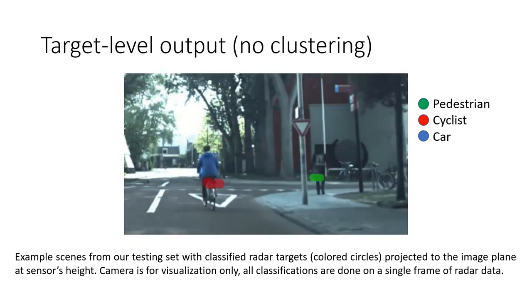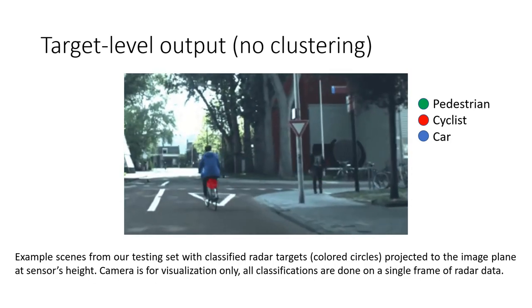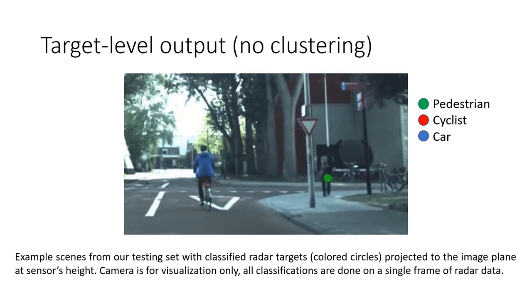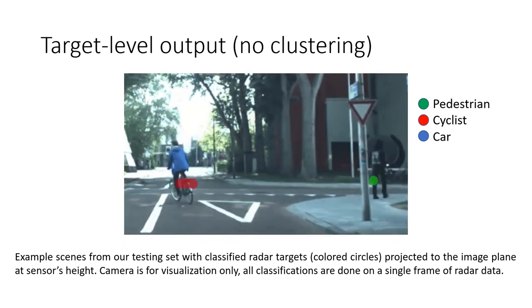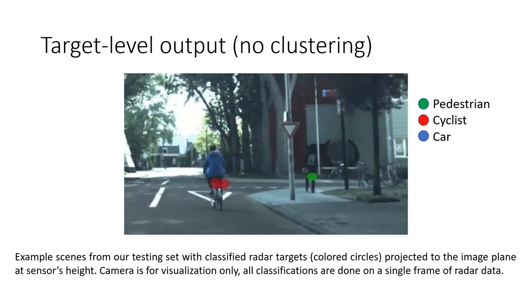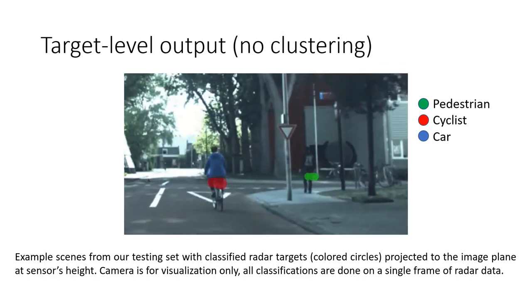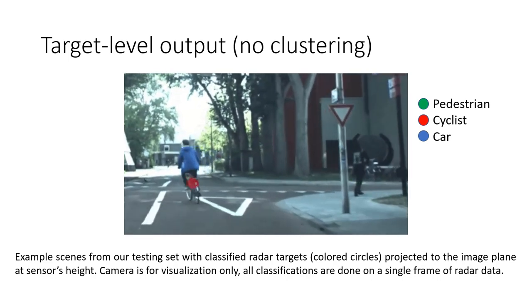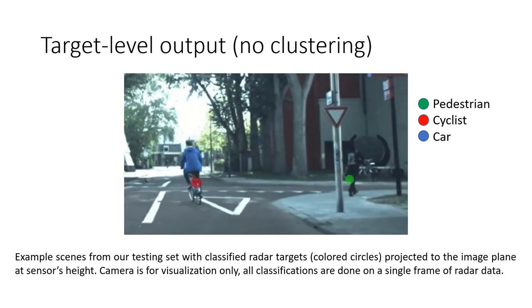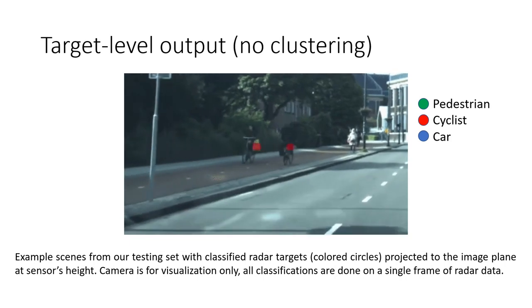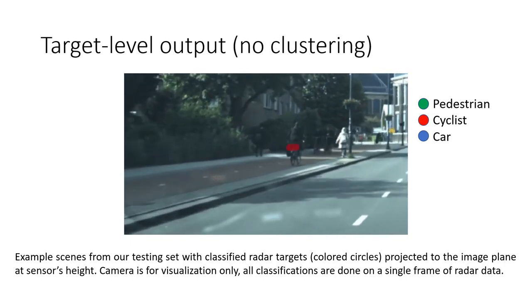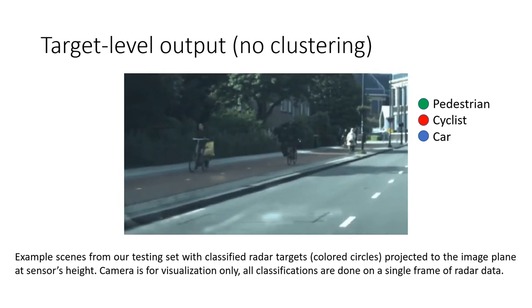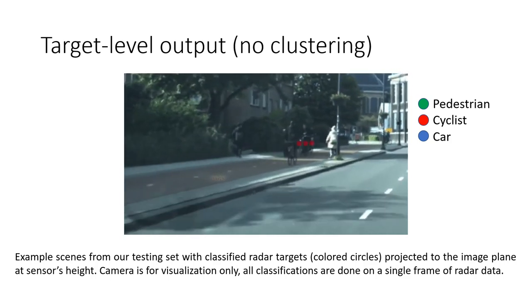Let me show you some qualitative results on videos. Here is the target level output of our algorithm, so no clustering was performed yet. On the left, you can see a bike and all reflections coming from its frame are correctly classified as bike. On the right, you can see a pedestrian with several correctly classified targets. This is from our test set, and the camera is only used for visualization. Here is another example. We drive by bikes on the left, which are correctly classified as bikes, and you can also see several pedestrian detections.